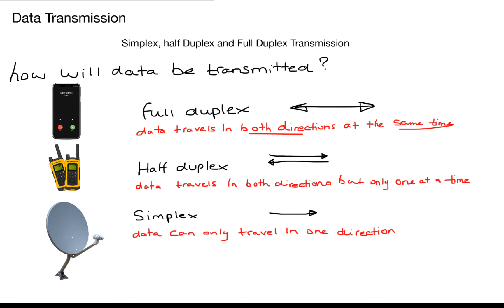For our full duplex transmission we'll use a mobile phone because if I call you I can talk to you and you can interrupt me and talk back to me so the data is flowing backwards and forwards in a two-way transmission.